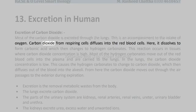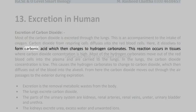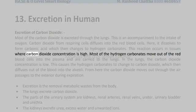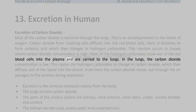Carbon dioxide from respiring cells diffuses into the red blood cells. Here, it dissolves to form carbonic acid, which then changes to hydrogen carbonates. This reaction occurs in tissues where carbon dioxide concentration is high. Most of the hydrogen carbonates move out of the red blood cells into the plasma and are carried to the lungs.